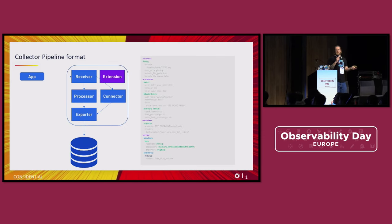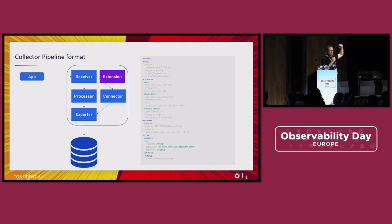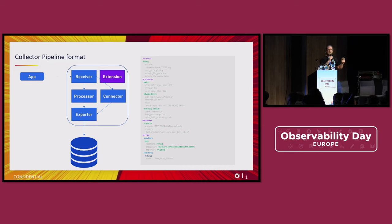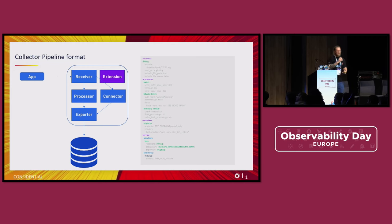In the Collector, the approach is a bit different. In your pipeline, you first list all the plugins — so you define all the receivers you want to use and configure them, same thing for processors, same thing for exporters. And at the end in the pipeline section, this is where you define the actual flow: start with this processor, then a Kubernetes attribute processor, then batch processor, and so on.